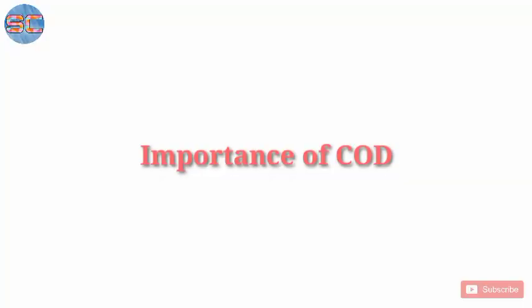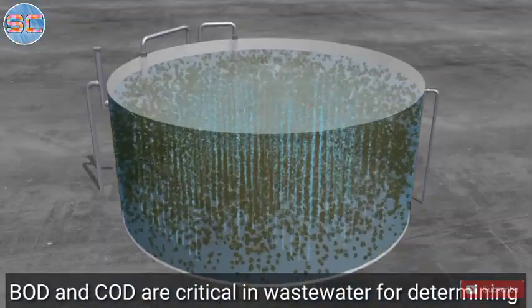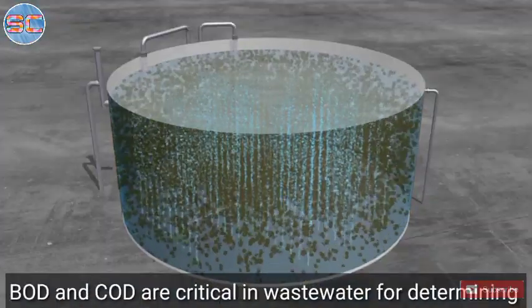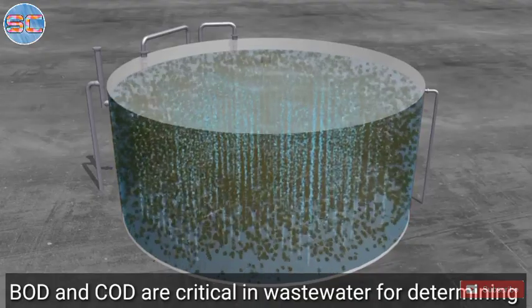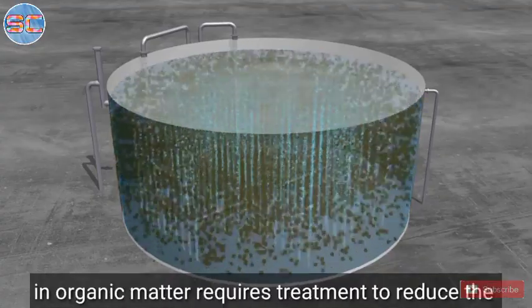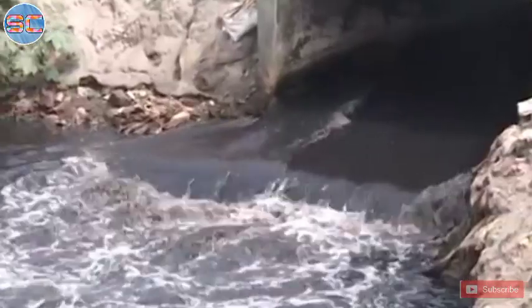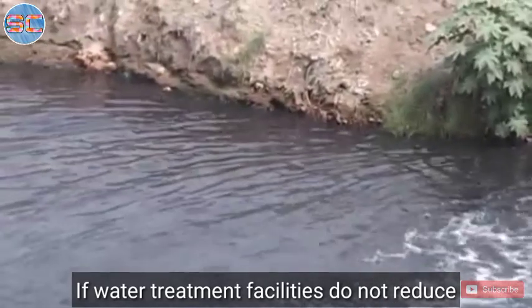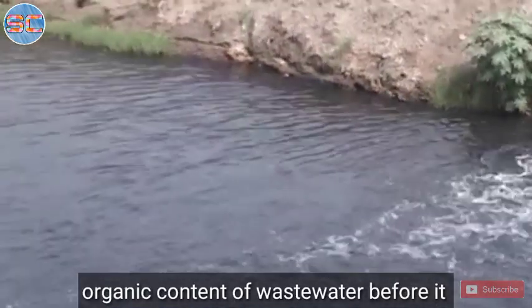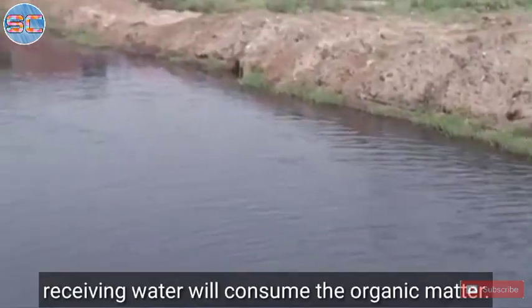Now we will talk about importance of Chemical Oxygen Demand. As a gauge of organic matter in a sample, BOD and COD are critical in wastewater for determining the amount of waste in the water. Waste that is high in organic matter requires treatment to reduce the amount of organic waste before discharging into receiving waters. If water treatment facilities do not reduce organic content of wastewater before it reaches natural waters, microbes in the receiving water will consume the organic matter.